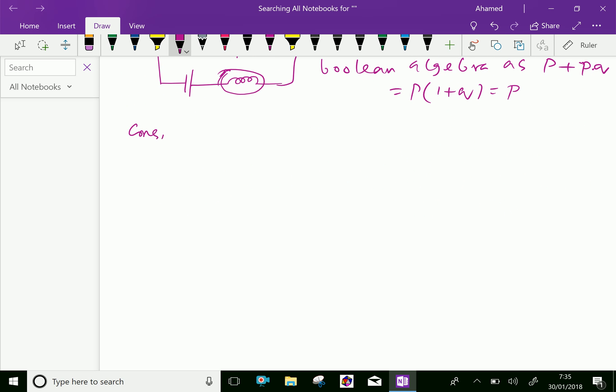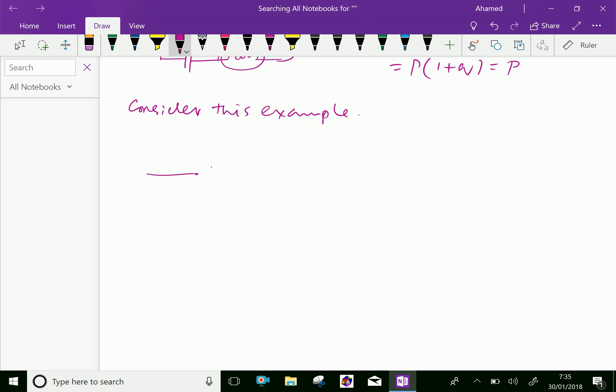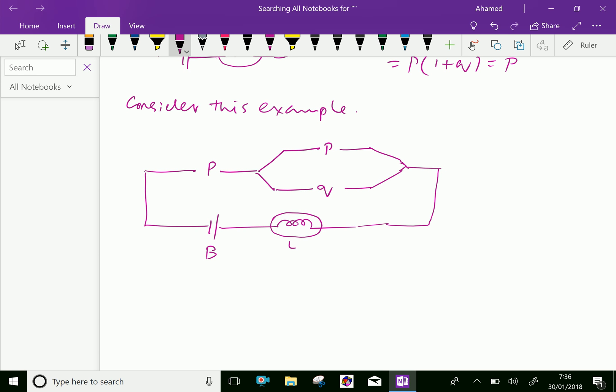Consider this example. Consider one more example. Here suppose P, switch one is here, and one more switch P is connected, and here switch Q, your battery is connected here, the lamp is connected through this. Now look at this circuit, which is equivalent to P dot P plus Q.